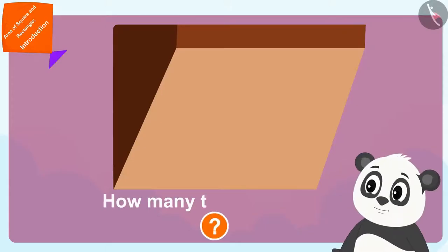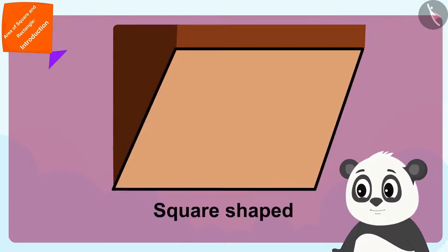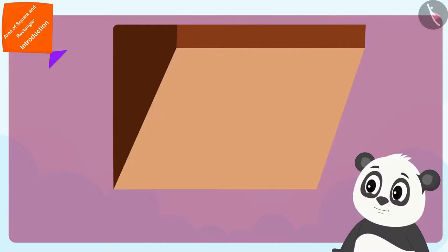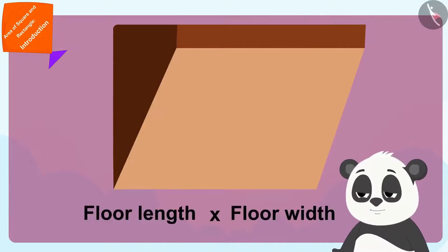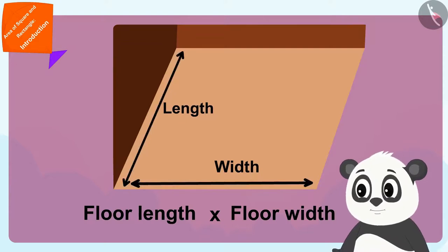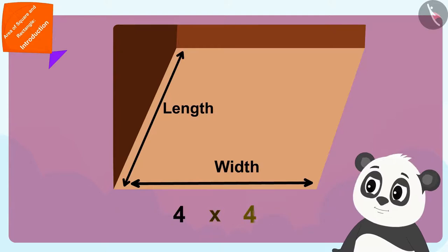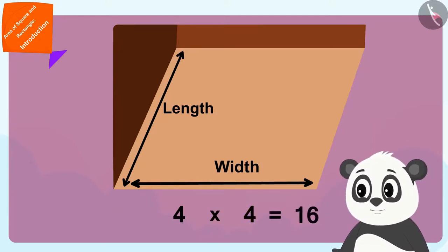In order to find the number of tiles required to cover Golu's square shaped floor, he only has to multiply the length of any two edges of his floor. In this way, Golu needs four times four or sixteen tiles.